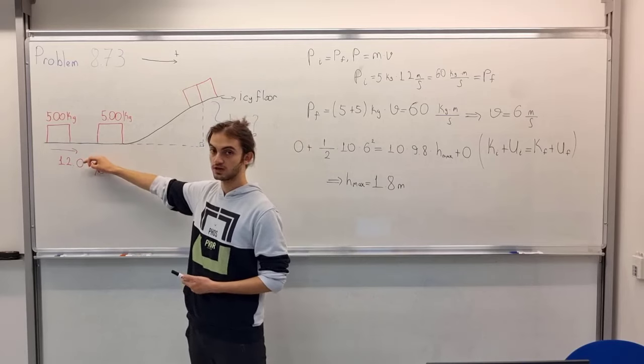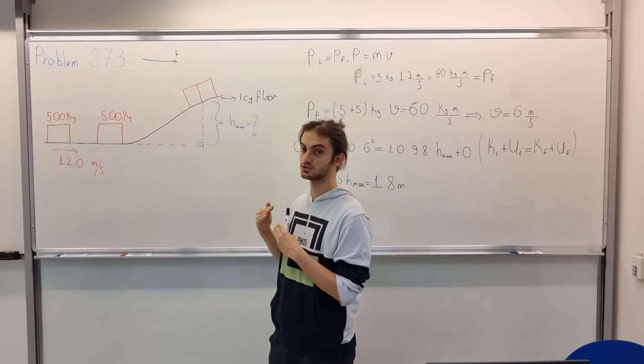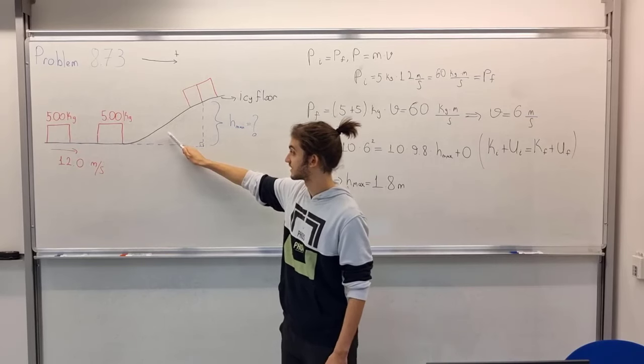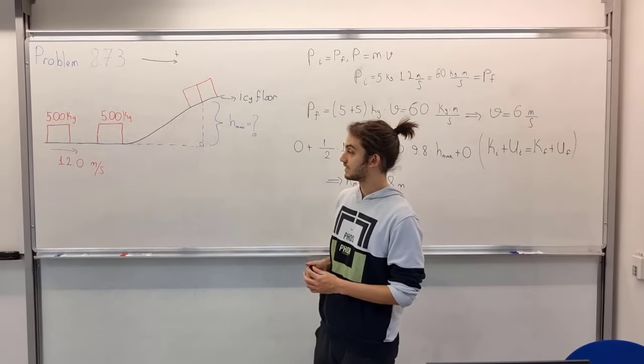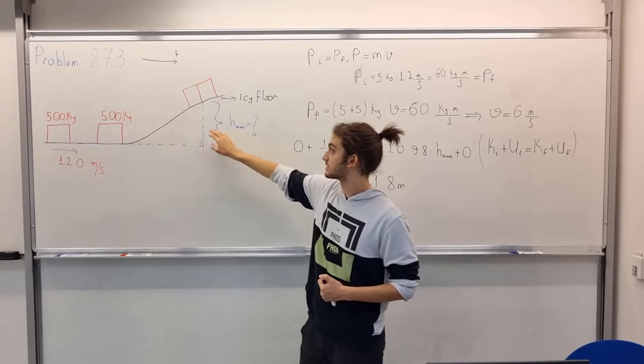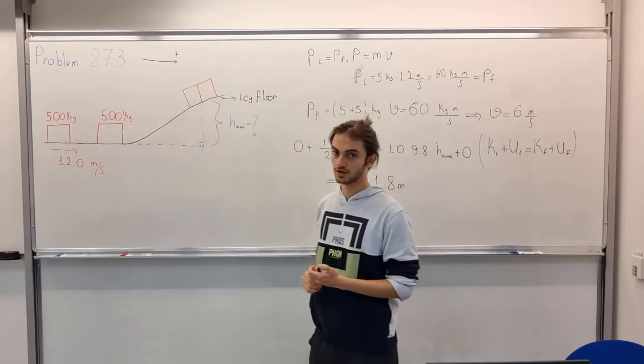Then this object collides with the other and sticks to it, then they start moving together and running uphill. In the question we need to find the maximum height of this collided object.